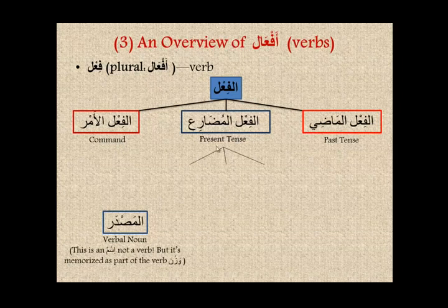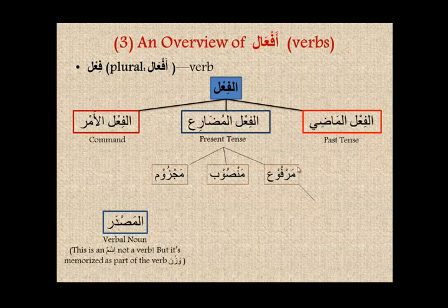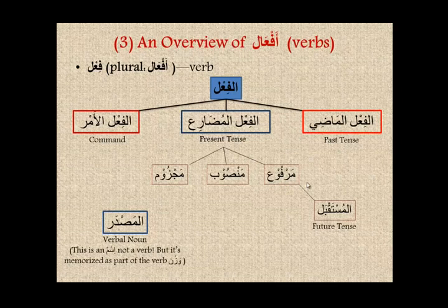The present tense can further be divided into three groups: marfoo', mansooob, or majzoom — giving us al-fi'l al-mudaari' al-marfoo', al-mansooob, and al-majzoom. The future tense (al-mustaqbal) is an extension of the marfoo' verb — it is identical to al-fi'l al-mudaari' al-marfoo', with a particle (harf) added in front. For example: kataba means he wrote (past tense). Yaktubu is the present marfoo' form, yaktuba is mansooob, and yaktub is majzoom. The command is uktub (write!), and the future is sayaktubu — identical to yaktubu but with the particle 'sa' added in front.